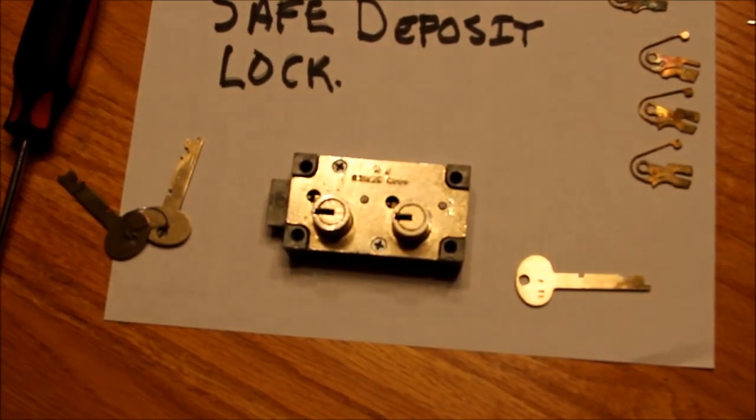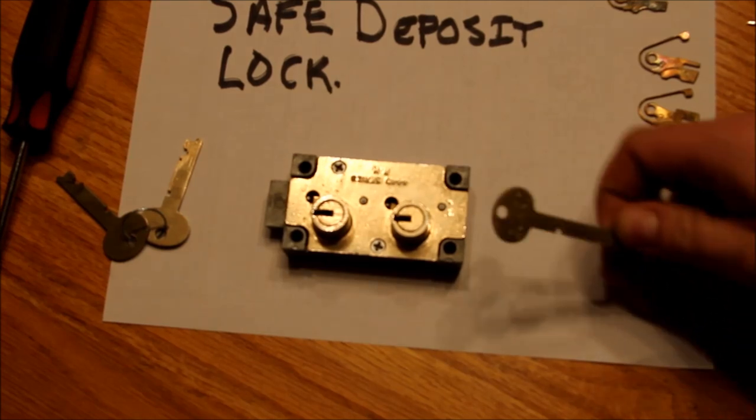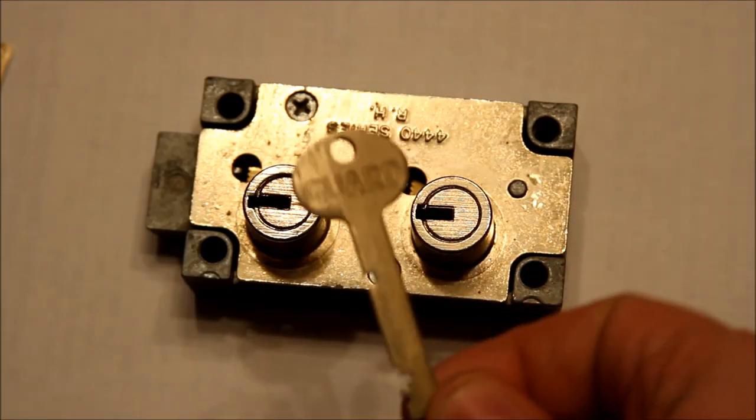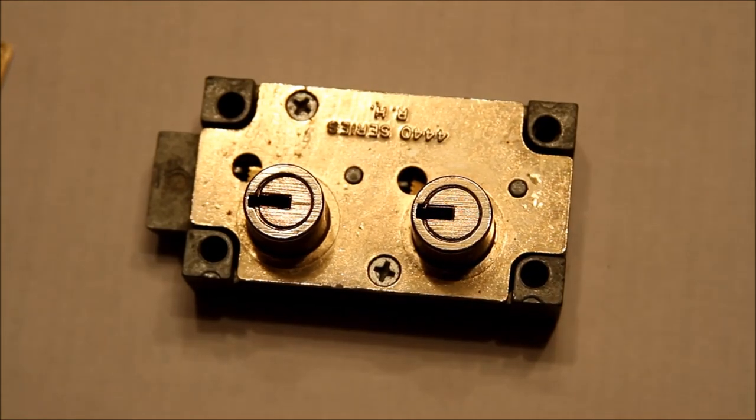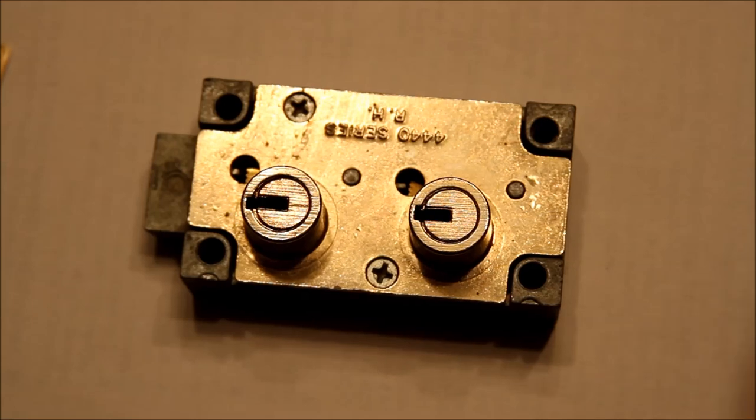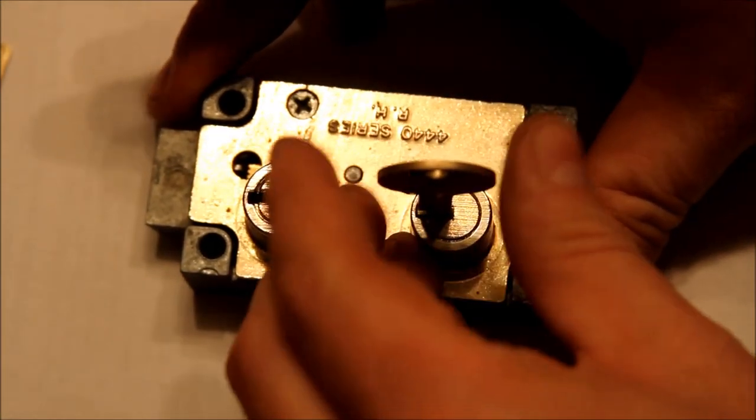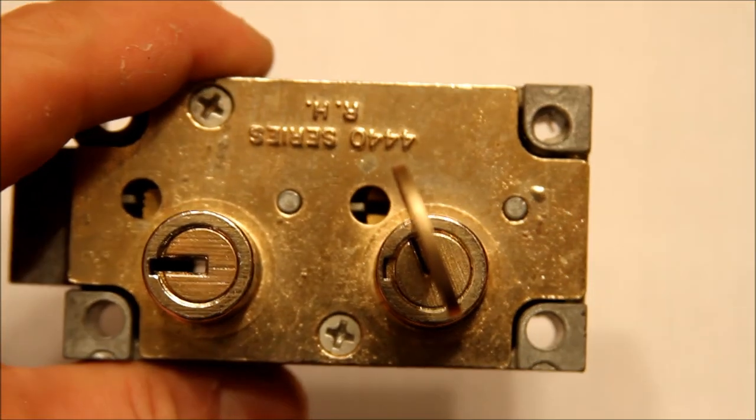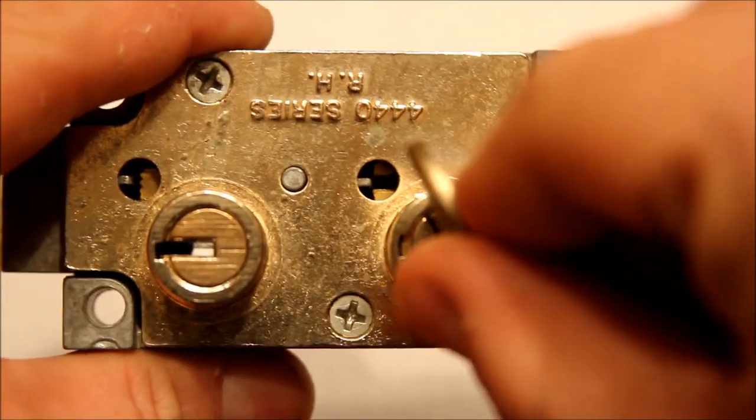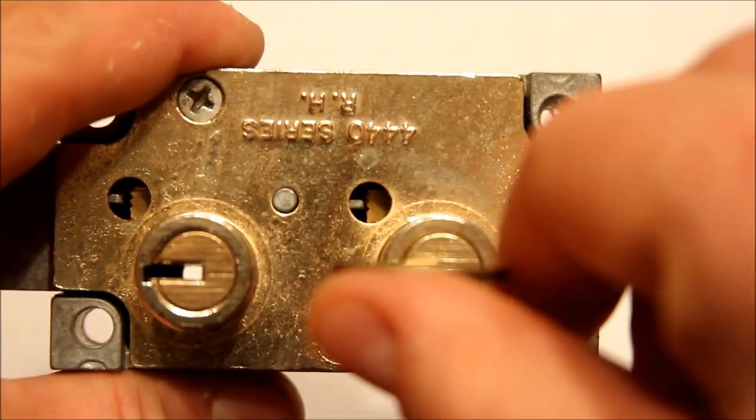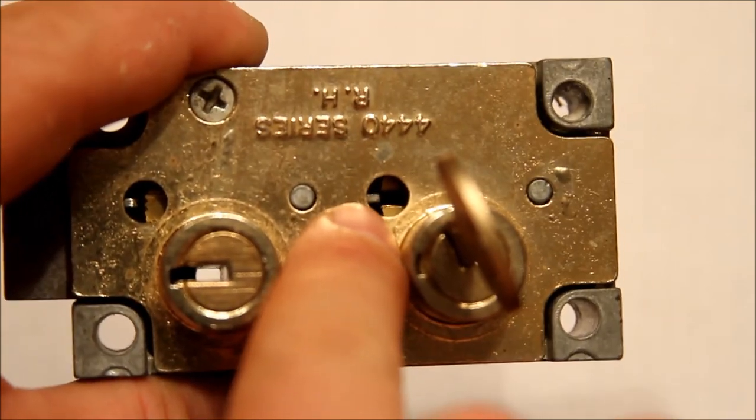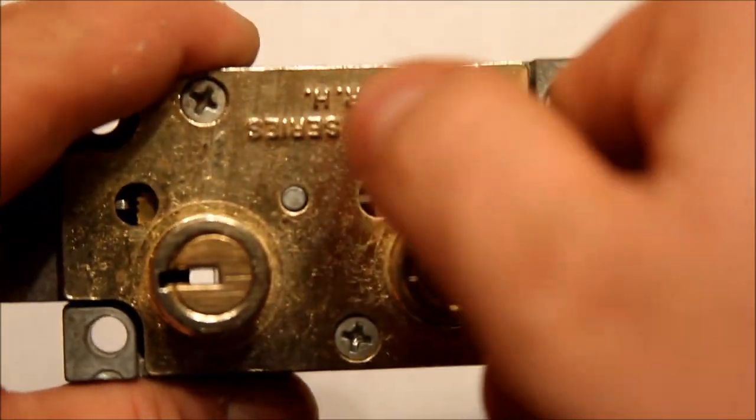Okay, so this works with two keys. This key is called the guard key. This is the key that the bank manager or the security guard would have, and he or she puts that in here and rotates it. There it is. You can actually see the levers inside here in the down position, and that clears the way for this little stub to go through the gates. So the guard comes and puts his key in.